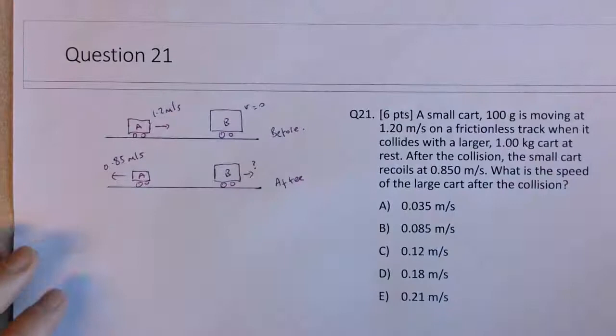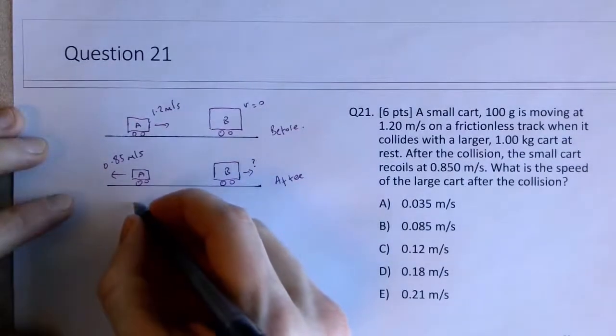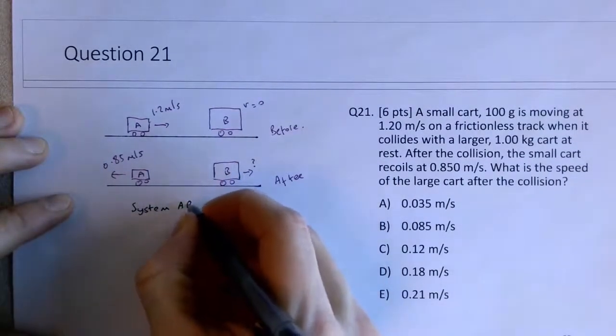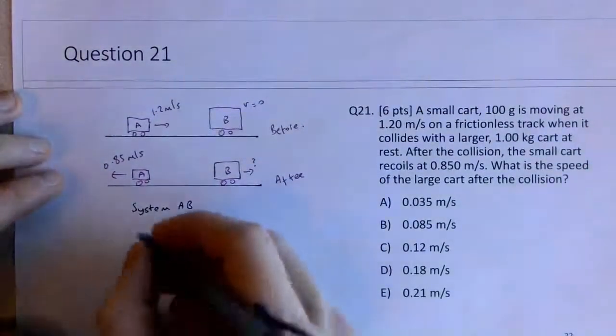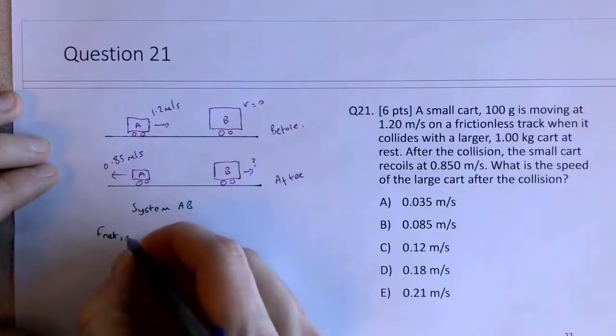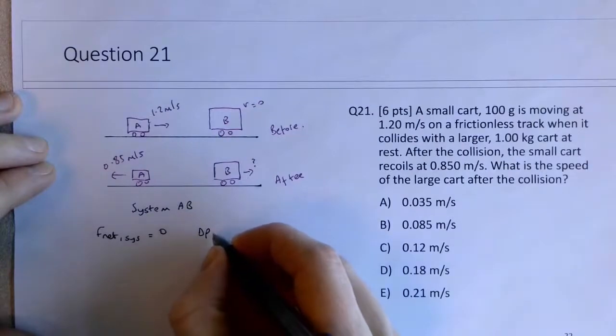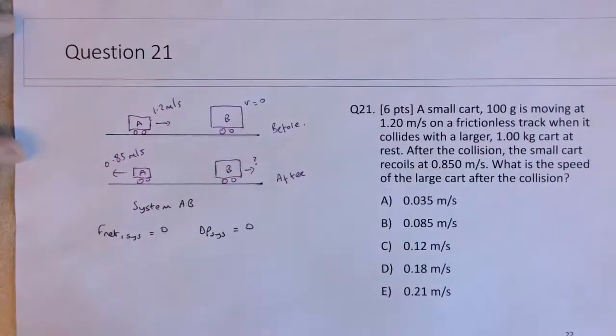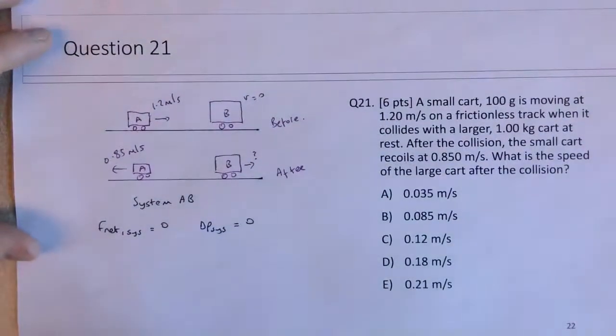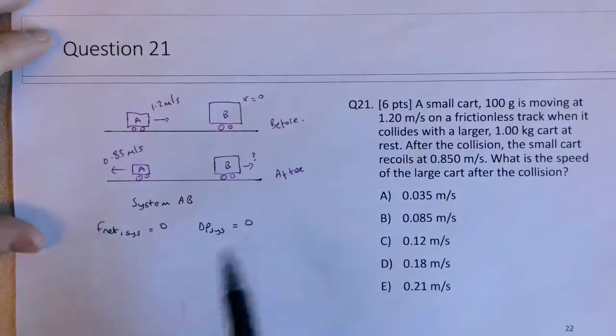So to answer this question, we're going to consider a system of both cars, system A and B. So if I consider the system of the two cars, I know the net force on this system is 0, which means the change in momentum of this system is 0. So its initial momentum will equal its final momentum, or the change in momentum of A will be negative the change in momentum of B. You can answer it both ways.